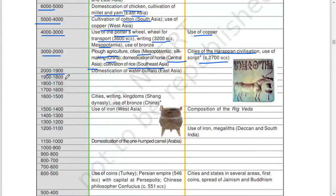2,000 to 1,900: domestication of water buffalo, East Asia. 1,900 to 1,800, 1,800 to 1,700, 1,700 to 1,600. 1,600 to 1,500: cities, writing, kingdoms, Shang dynasty, use of bronze, China.